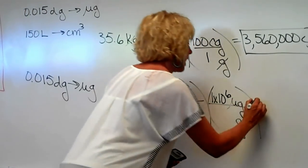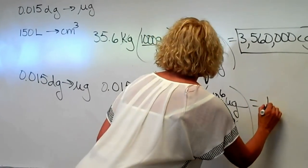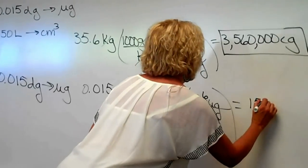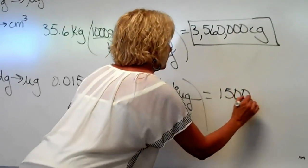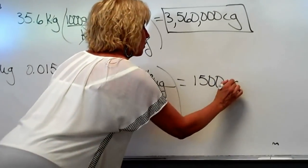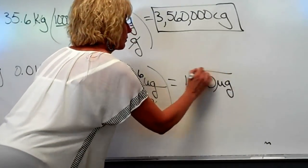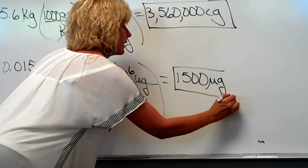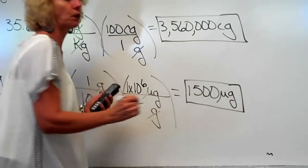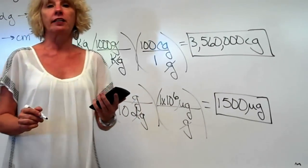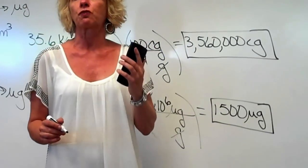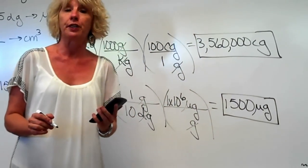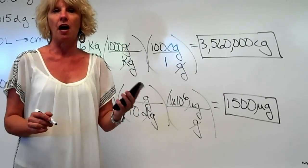And we get 1,500 micrograms. This is how you use unit analysis to change from one metric unit to another.